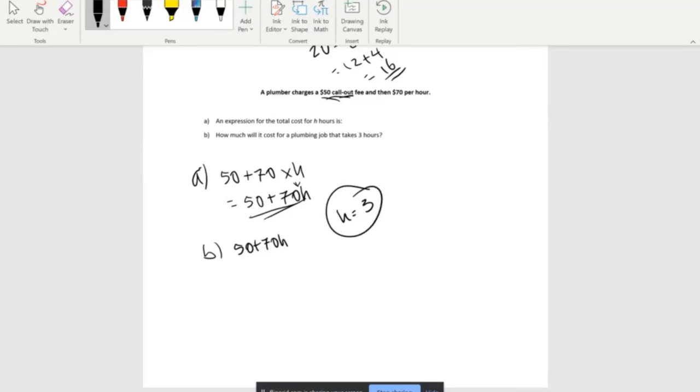Now we can expand: 50 plus 70 multiplied by H. We have to expand first before we substitute. Now we substitute: 50 plus 70 multiplied by 3. In BIDMAS, or order of operations, we know that multiplication has to go first before addition. So first let's do our multiplication.